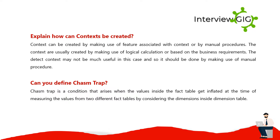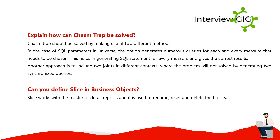Can you define chasm trap? Chasm trap is a condition that arises when the values inside the fact table get inflated when measuring values from two different fact tables by considering the dimensions inside a dimension table. How can chasm trap be solved? Chasm trap should be solved using two methods. In the case of SQL parameters in the universe, the option generates numerous queries for each measure that needs to be chosen, generating a SQL statement for every measure and giving correct results. Another approach is to include two joins in different contexts, where the problem gets solved by generating two synchronized queries.